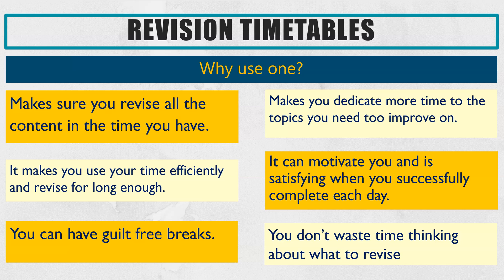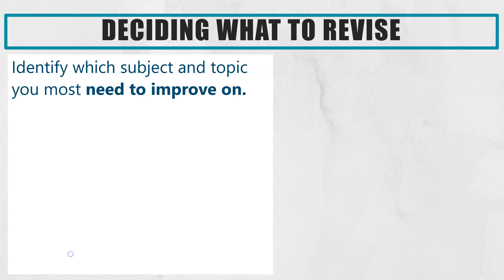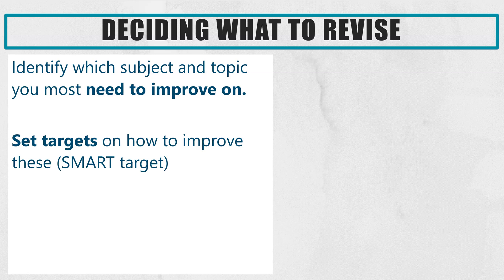So let's have a look at how you should start to plan your revision. The first thing to do to make sure you are being efficient with your time is to identify which subjects and which topics you need to improve the most. Think about which tests you scored lowest in and which topics or skills you find harder. Then you can set some smart targets on how to improve — I have a video on setting smart targets and identifying which subjects you need to improve on, so you might find it helpful to look at that first.